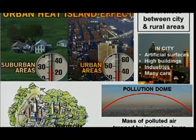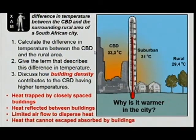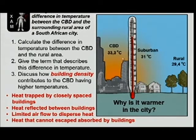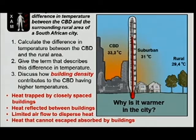You have seen that they've asked: why is it warmer in the city than in the rural areas? Artificial surfaces, high buildings, industries, many cars, and so forth. This is the question that was asked last year. This is the exact diagram — I just added a little color to it. This is the CBD at 33.3 degrees Celsius, suburban at 31, then 29. The further you move, the colder it becomes. The first question was quite easy: calculate the difference between the temperature in the CBD and the rural area. All you had to do was subtract, and that would be 3.9 degrees Celsius. The second question: give the term that describes this temperature difference. That, of course, would be your heat island.